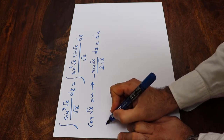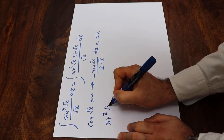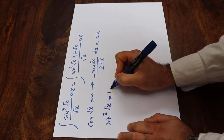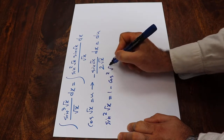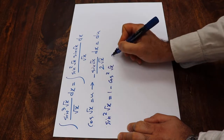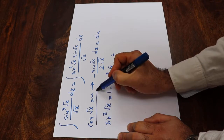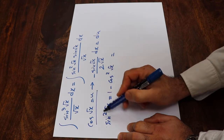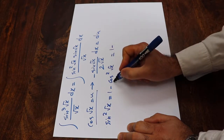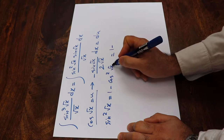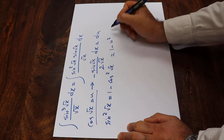Also from trigonometry we know that sine squared of square root of x is equal to 1 minus cosine squared of square root of x. And since cosine of square root of x is defined as u, therefore sine squared of square root of x will be equal to 1 minus u squared.